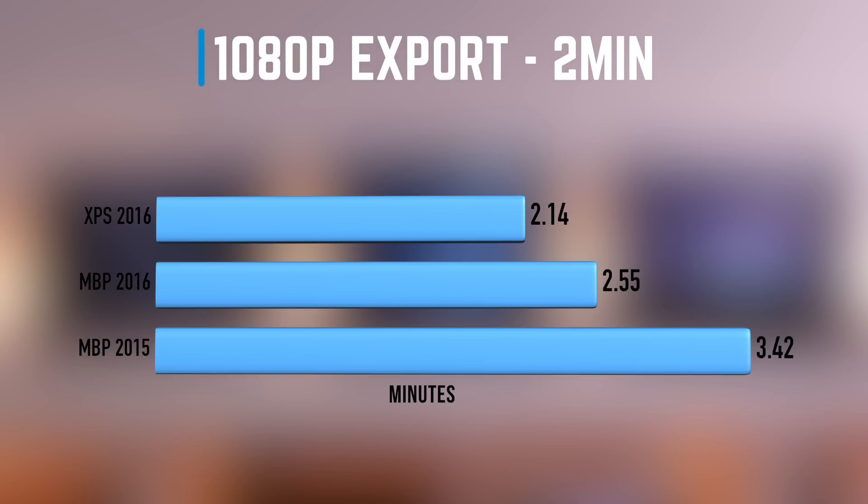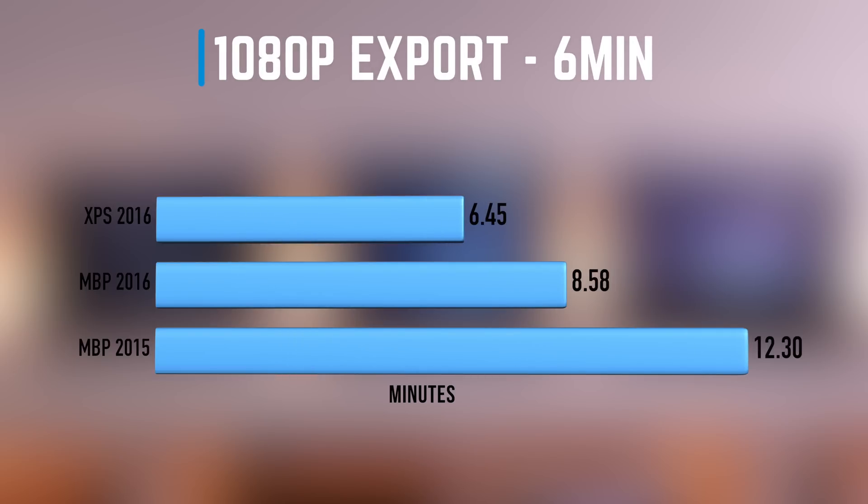We ran the same test again but using the six-minute version of that edit. Once again, the Dell XPS 2016 came out on top with an export time of six minutes 45 seconds, followed by the MacBook Pro 2016 with eight minutes 58 seconds, followed by 12 minutes 30 seconds on the 2015 MacBook Pro. While there wasn't a huge difference exporting the two-minute file across the three, you can see that exporting the six-minute version has started to make a big difference, and if the difference is this much at a six-minute export, it's going to be huge for a much larger project.